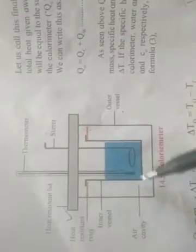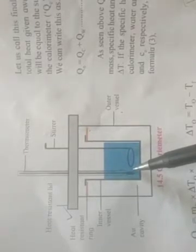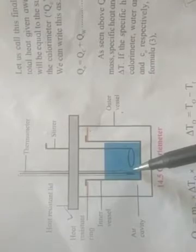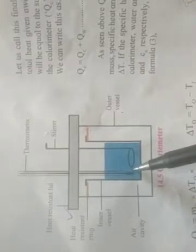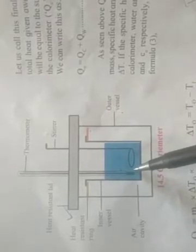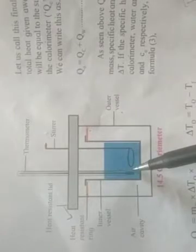A calorimeter is a device used to find out the heat content of a given object. To find out the heat content of a given object, we need to know its mass, the specific heat, and the change in temperature — whether it is an increase or decrease in temperature.